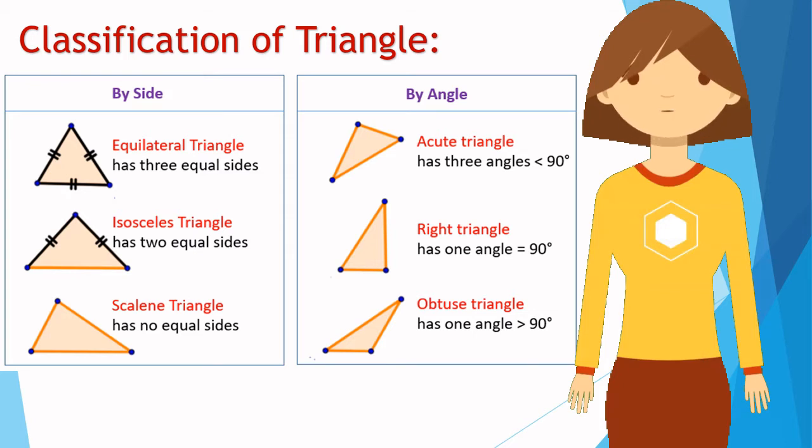A triangle with three equal sides is called an equilateral triangle. A triangle with two equal sides is called an isosceles triangle. A triangle with no equal sides is called a scalene triangle.